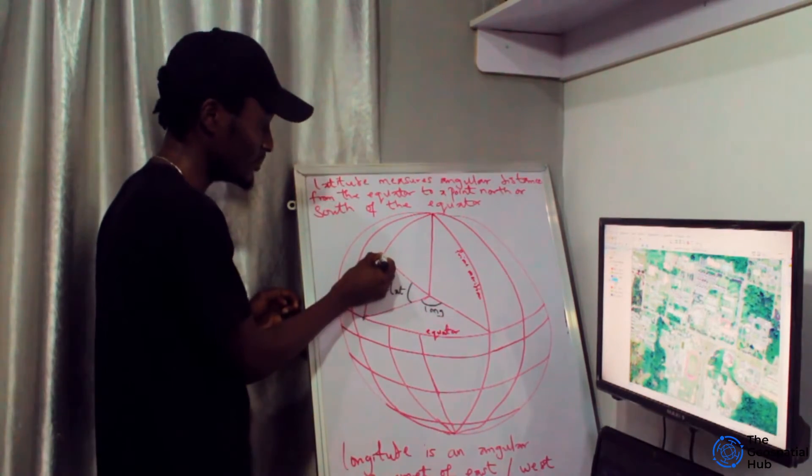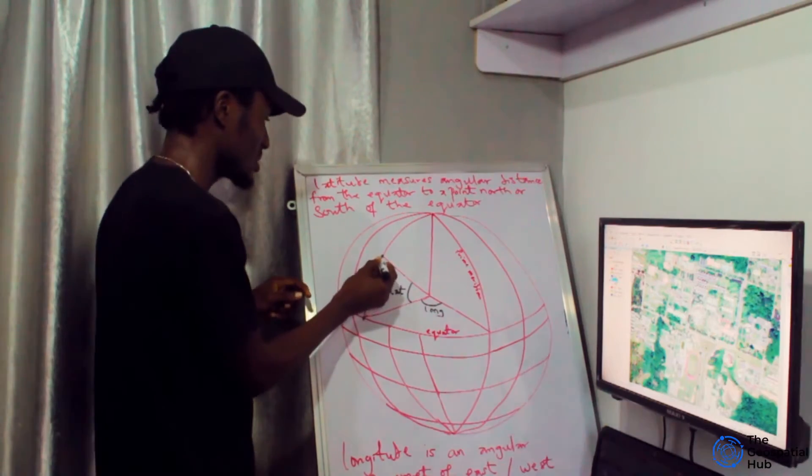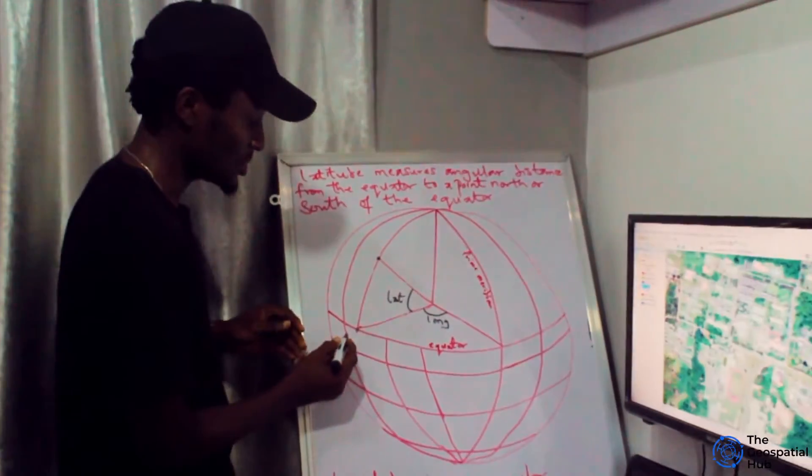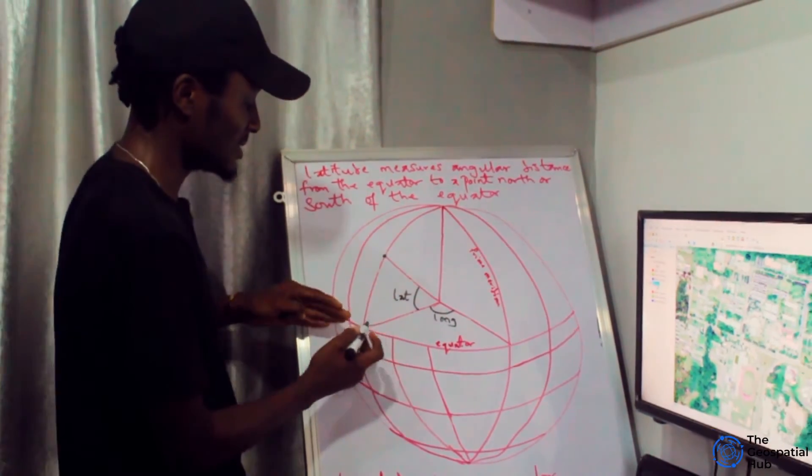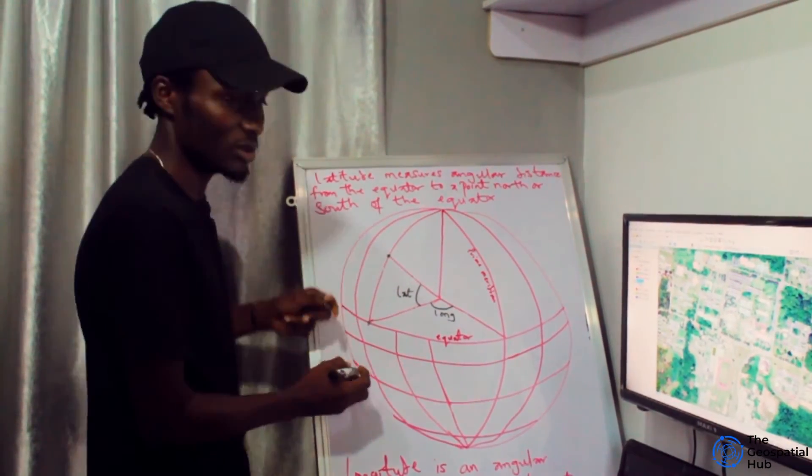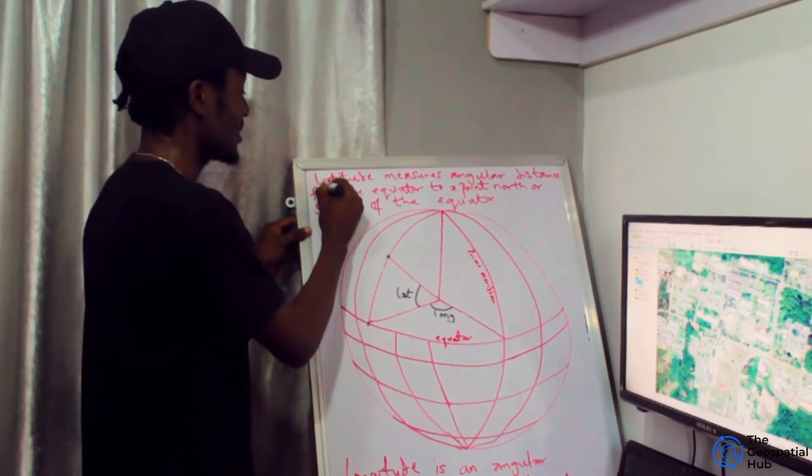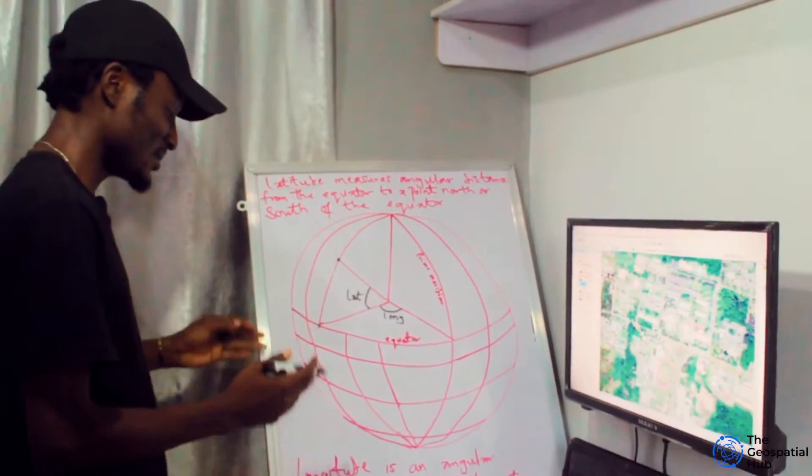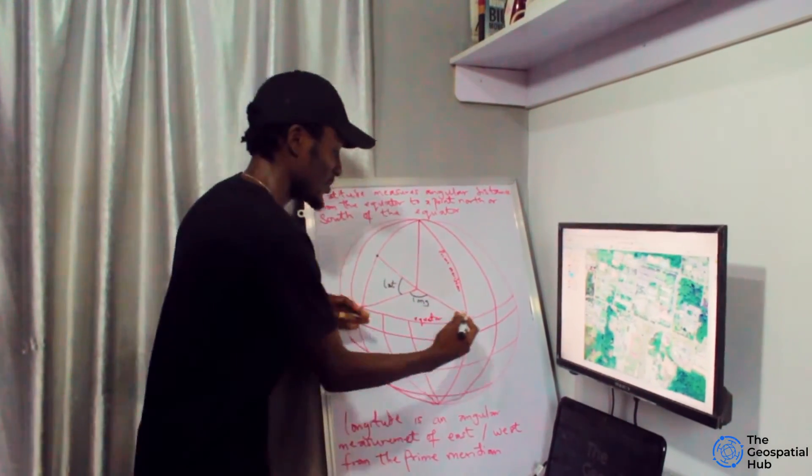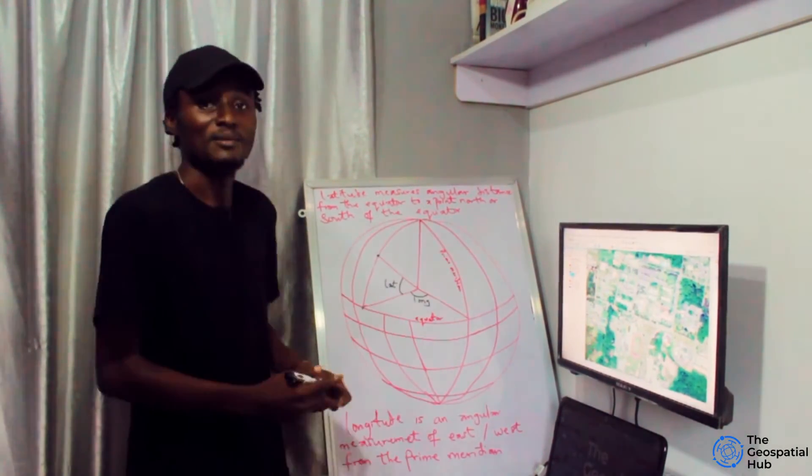This is the latitude - it measures the angular distance from the equator to a point north or south of the equator. Longitude is also an angular measurement, east or west of the prime meridian.